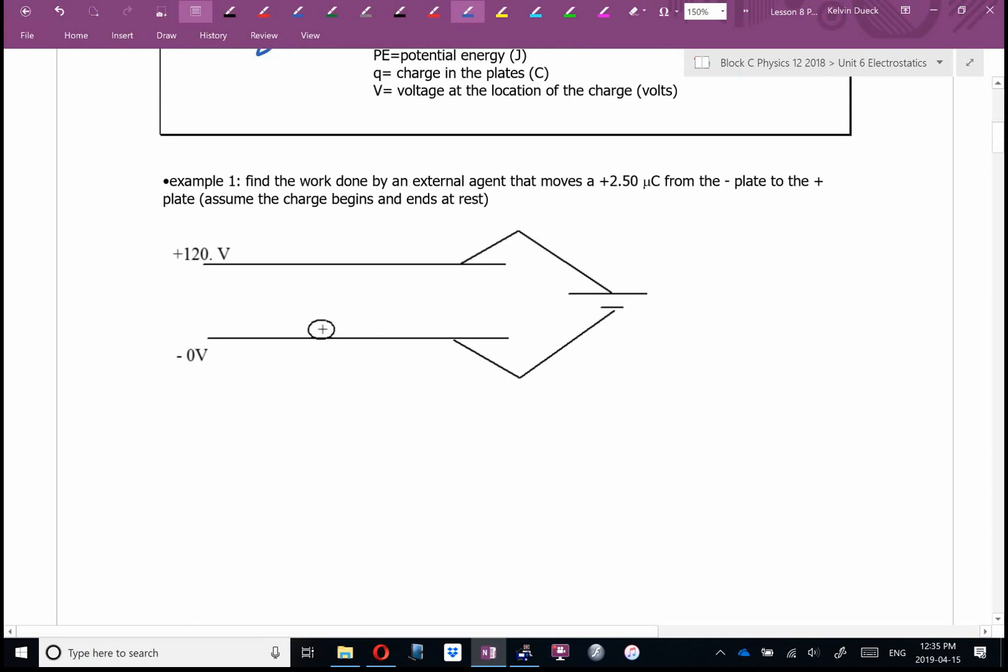Example one: find the work done by an external agent that moves a positive 2 microcoulomb charge from the negative plate to the positive plate. Mathematically, this is the same as lifting an object off of the ground. You're giving it potential energy. You're doing work. This positive charge does not want to go to the upper plate. There is a force pulling it down just like gravity.